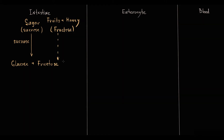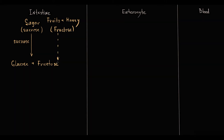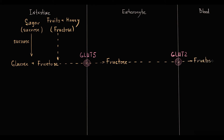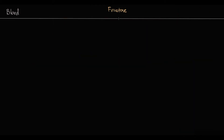Fructose is rapidly absorbed in the proximal part of the small intestine by the GLUT5 transporter in enterocytes. From enterocytes, fructose is transported into the blood by the GLUT2 transporter. From the blood, fructose is taken up primarily by the liver and kidney tissues.